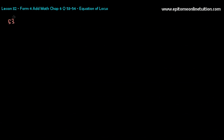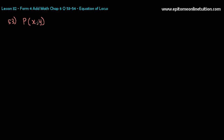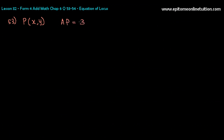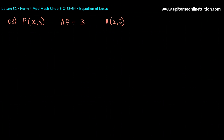Let's have a look at question number 53. It says: find the equation of the locus of a moving point P. The moment you see a moving point P, write it out — since it is a moving point, the coordinates will always be X and Y. The condition says that its distance from point A is 3 units, where A is a fixed point with coordinates (2, 5). So AP equals 3 — the distance of A to P is 3 units.